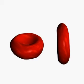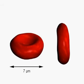Erythrocytes are uniform discs, slightly concave on both sides, enveloped by a delicate cell membrane. They are about 7 micrometers in diameter and about 2 micrometers thick.